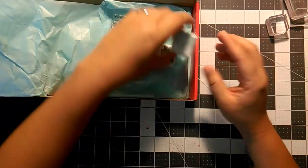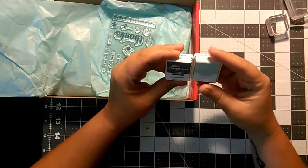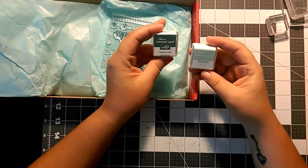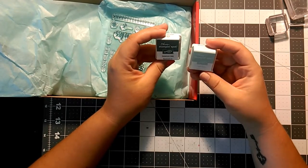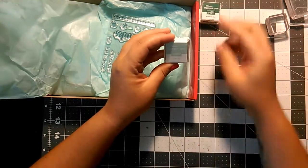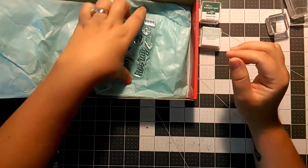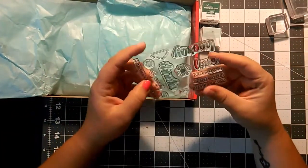Right away I see we actually have two Stampin' Spot inks. We have one in Tranquil Tide, which is one of the new in-colors, and we have Soft Sky.